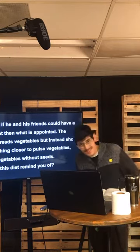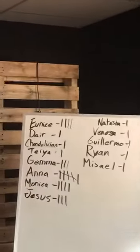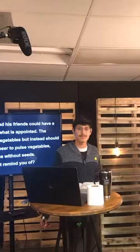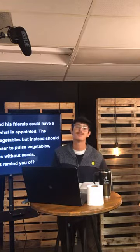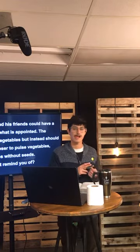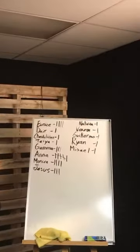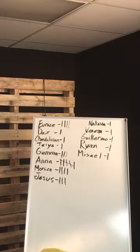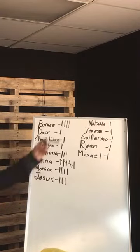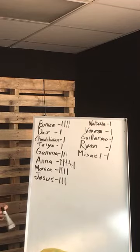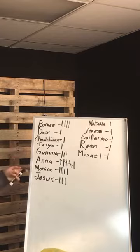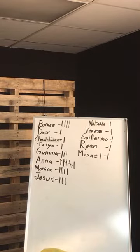Alright, let me read the points. Mishael, Ryan, my brother, Yermo, Vanessa, Natasha, Taya, Chendo, and Dair all have one point — I'm very surprised, Natasha, you came with like five or six points last week. Step up your game. Hema and Jesus are tied getting three points, and then Monica and Eunice are tied for second place, and Anna is in first place. Good job.